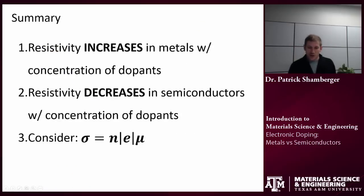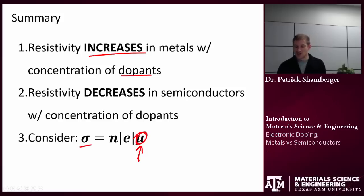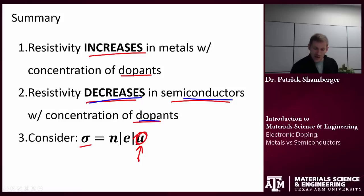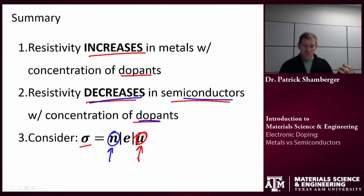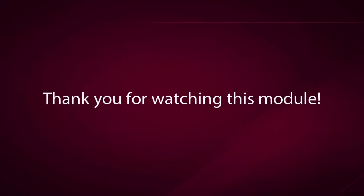In summary: resistivity increases in metals with the concentration of dopants, because those dopants scatter free carriers, decreasing mobility and decreasing conductivity. On the other hand, in semiconductors, resistivity decreases with the concentration of dopants, because we're primarily changing n — the number of carriers — having a much bigger impact on n than on mobility in the system.